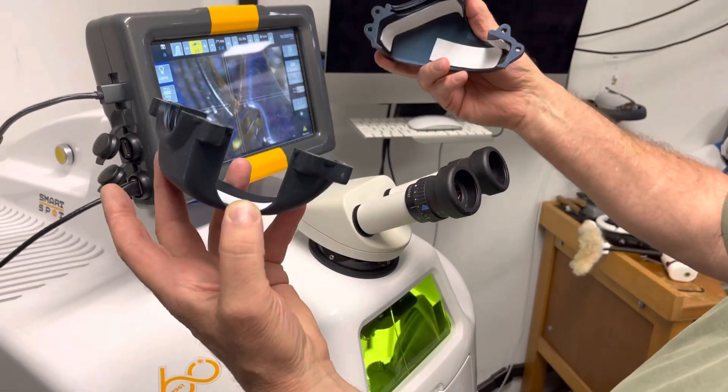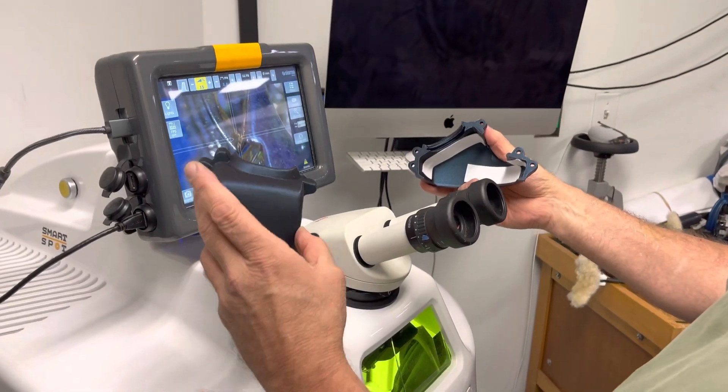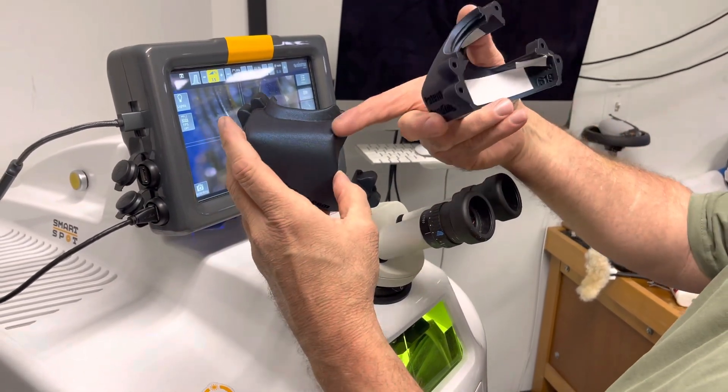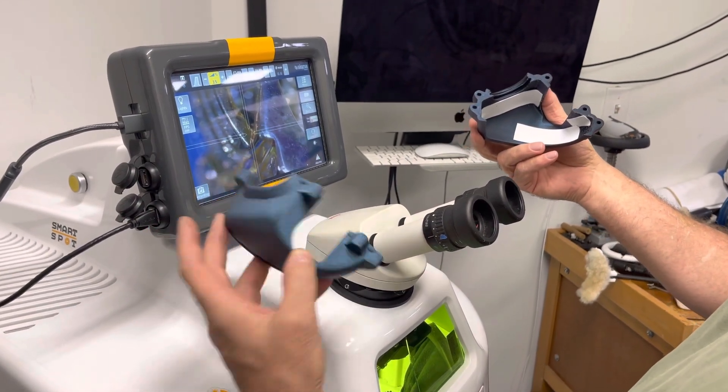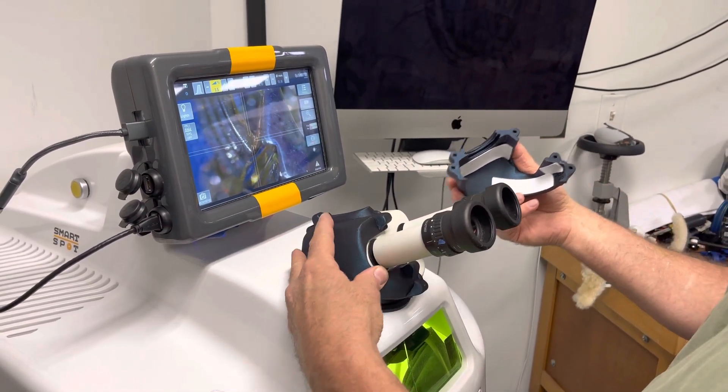So what you do is I've made these shell halves. You take the first half, we make these in various colors. This is a dark blue, but we make them in white in general. So you take the first half, slide it over your optical head.